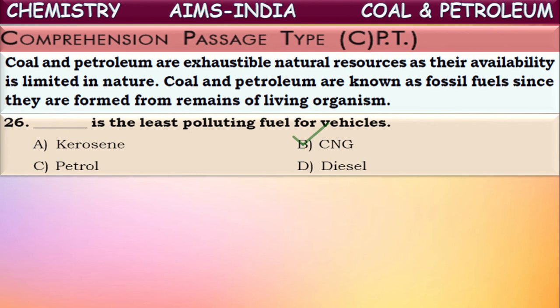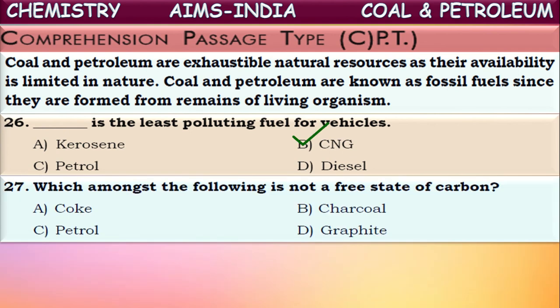Next question: which among the following is not a free state of carbon — meaning in which is carbon not in the free state? Coke, charcoal, and graphite are pure forms of carbon containing almost only carbon. Petrol, however, is made up of hydrocarbons — compounds containing carbon and hydrogen in combination. Petrol contains other elements like hydrogen, so it is not purely carbon. Petrol is not in the free state of carbon; it is a compound of carbon. The answer is petrol.